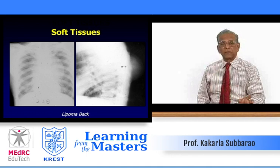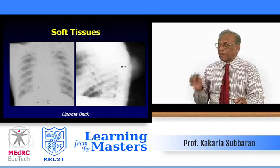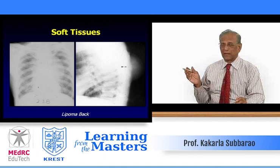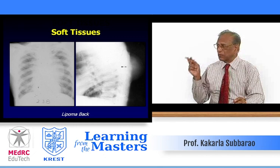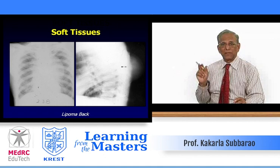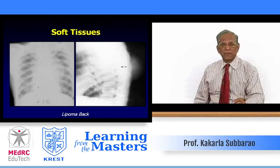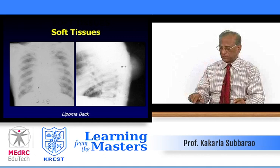Looking at the film on your left side — it is a routine chest, but there is a mass. It looks as if it is in the anterior mediastinum or somewhere on the left side. But if you take the lateral view, there is actually a huge lipoma on the back. So it is important to take a lateral view; otherwise, you could have mistakenly ordered a CT or other investigations for what appeared to be a mediastinal mass.